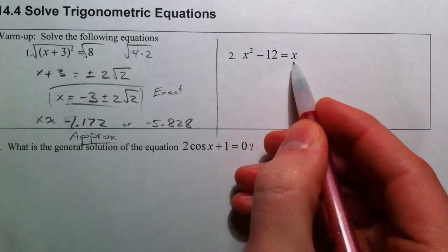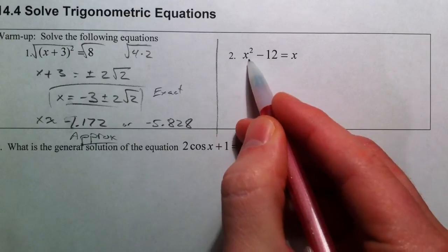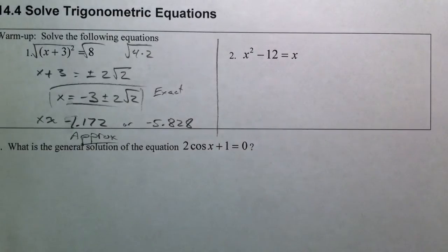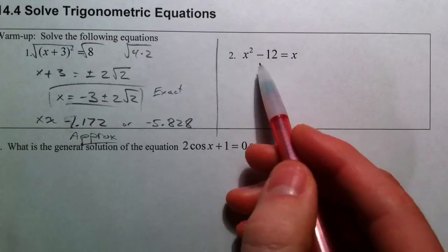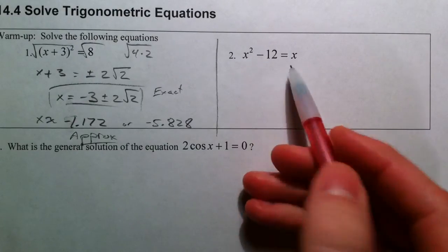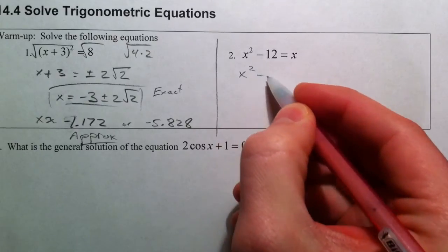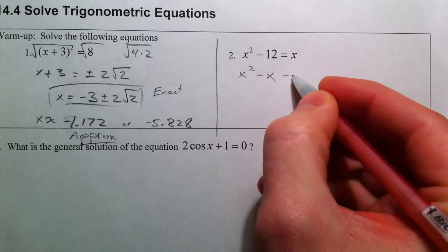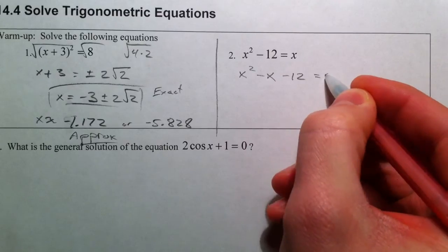x squared minus 12 equals x. So we've got an x squared and an x. You can't take the square root of both sides here because you'd end up with the square root of x. So if you have an x squared and an x, you want to get everything to one side. So we subtract the x, and then factor.